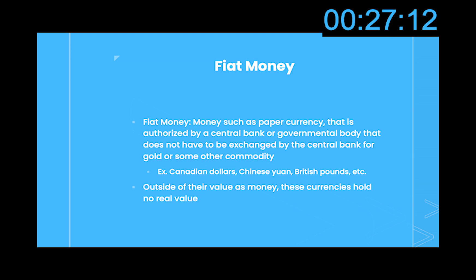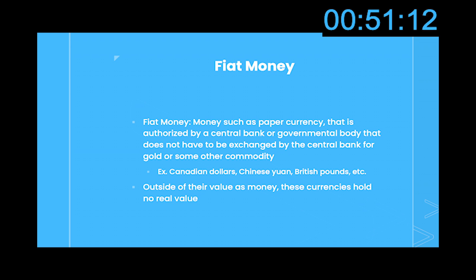Then we have fiat money. This is money such as paper currency that is authorized by a central bank or governmental body. This money does not have to be exchanged by the central bank for gold or some other commodity — it is just accepted as money. Some examples are Canadian dollars, British pounds, or euros in many European countries. Outside of their value as money, these currencies hold no real value. Sure, the actual paper and metals that the bills and coins are made of have a bit of value, but nowhere near the value that is assigned to them by the central bank.